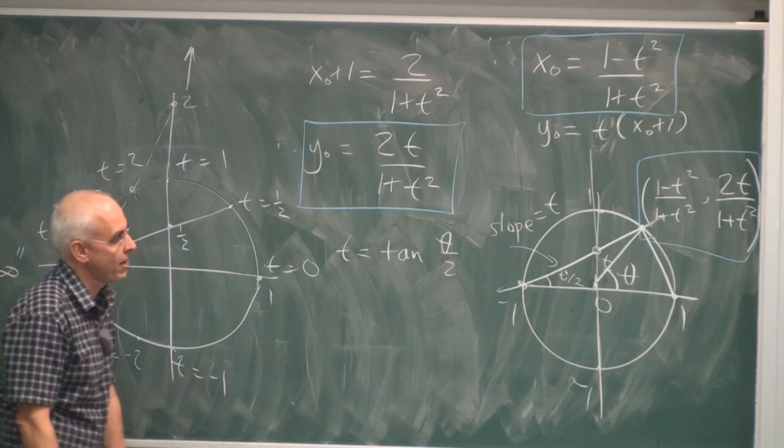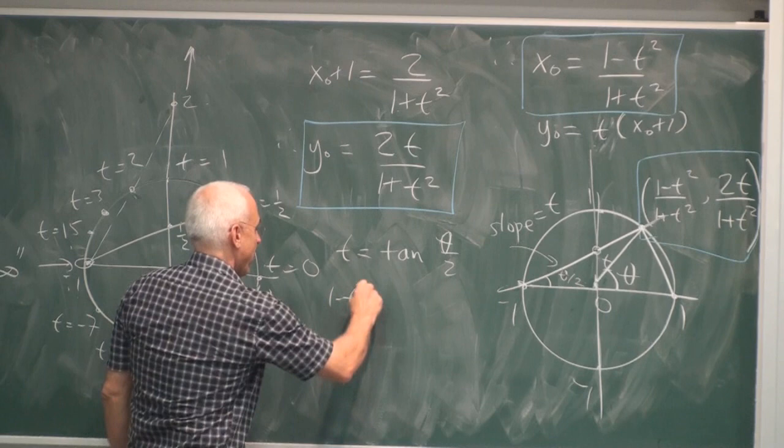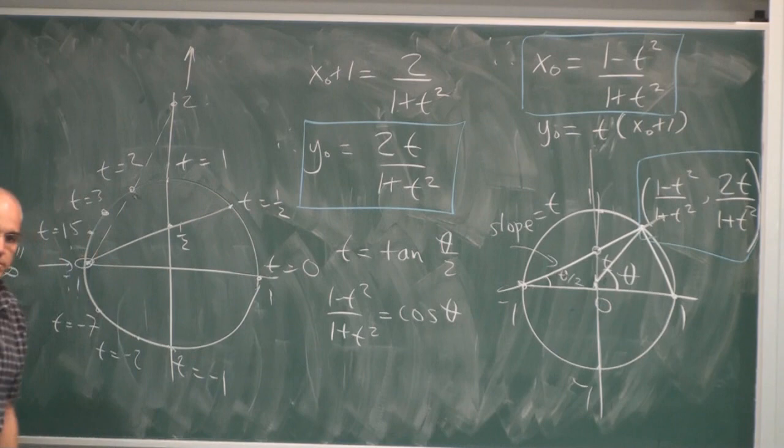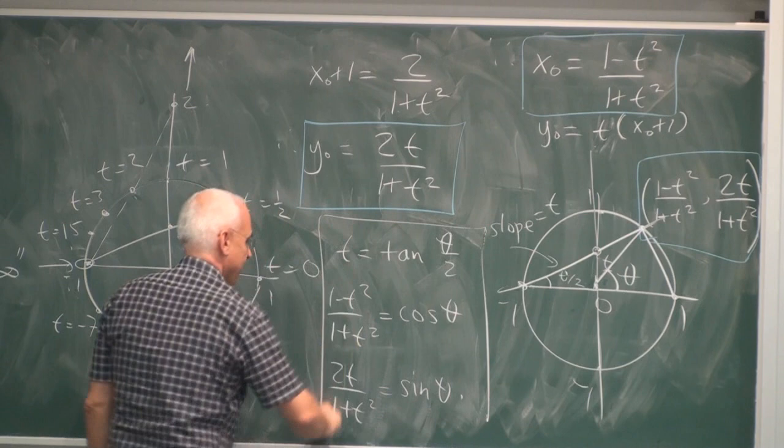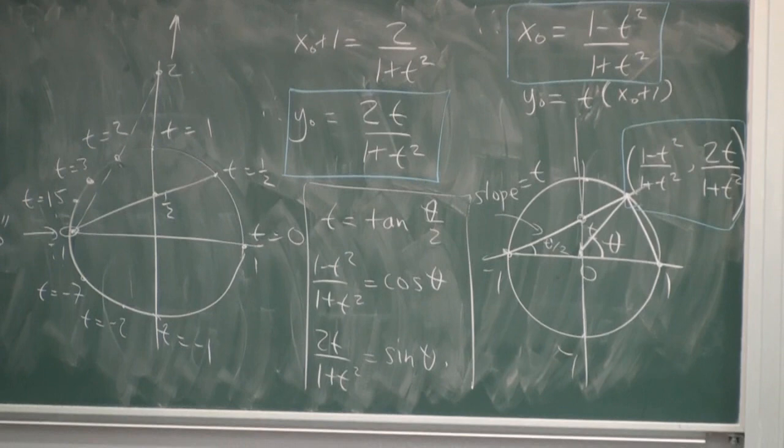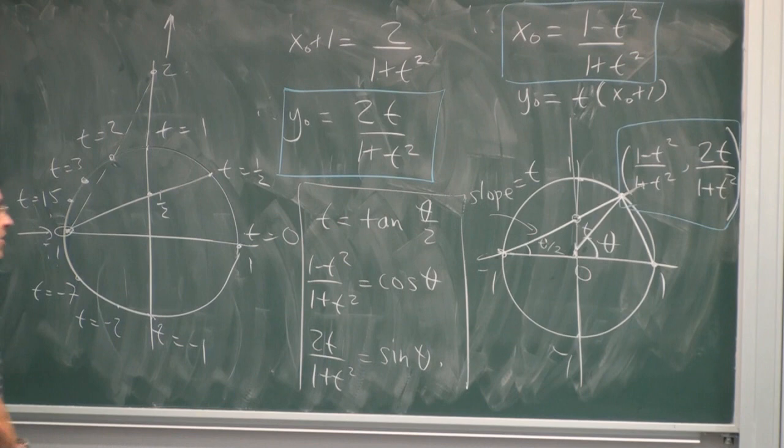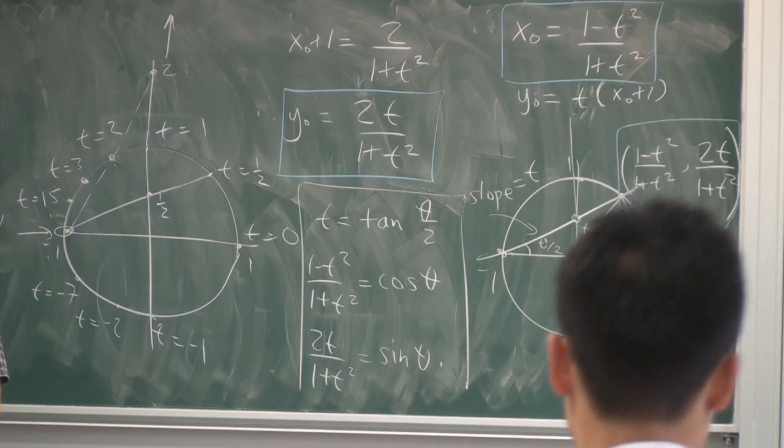And then this point, the x coordinate, which is the cosine of theta, will be (1-t²)/(1+t²). So that's going to be cos θ. And the y coordinate is sin θ. Those are very important substitutions that are often used to rationalize integrals in integral calculus. And it's really coming from this geometry that goes back to Diophantus and arguably to the Pythagoreans.